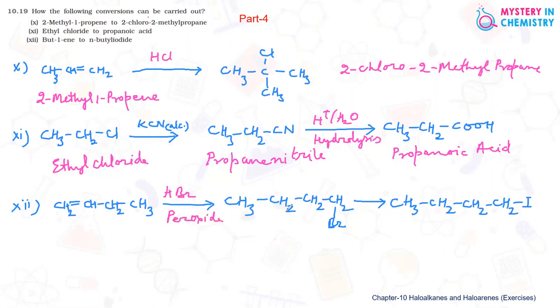After that, substitution by iodide: Br is replaced by iodide when the reaction is with NaI in the presence of dry ether. The first compound is but-1-ene, the second is 1-bromobutane, and the last one is 1-iodobutane.